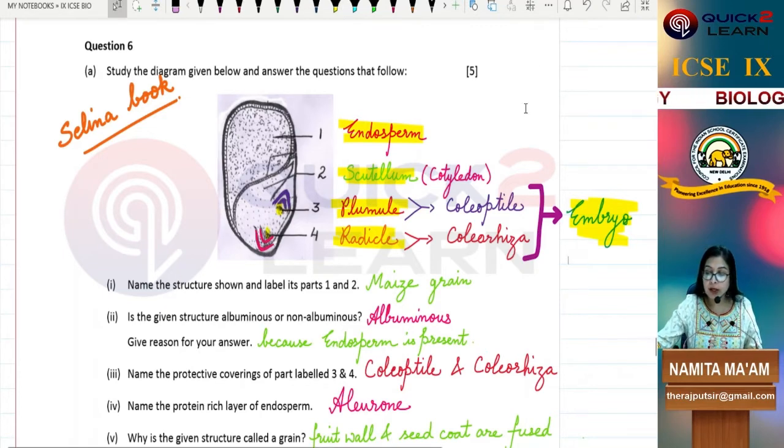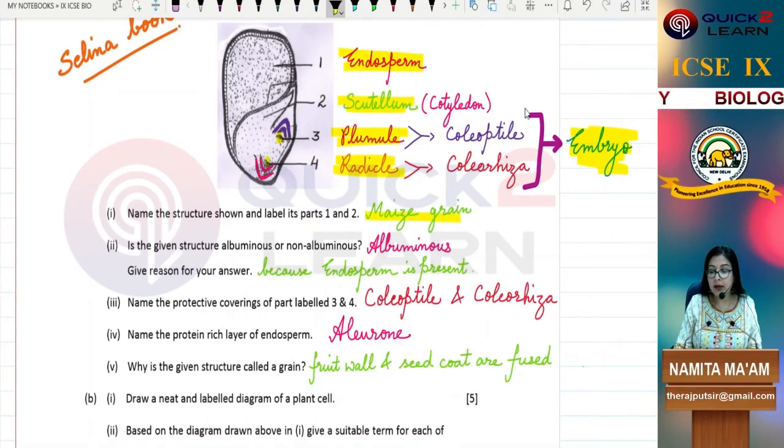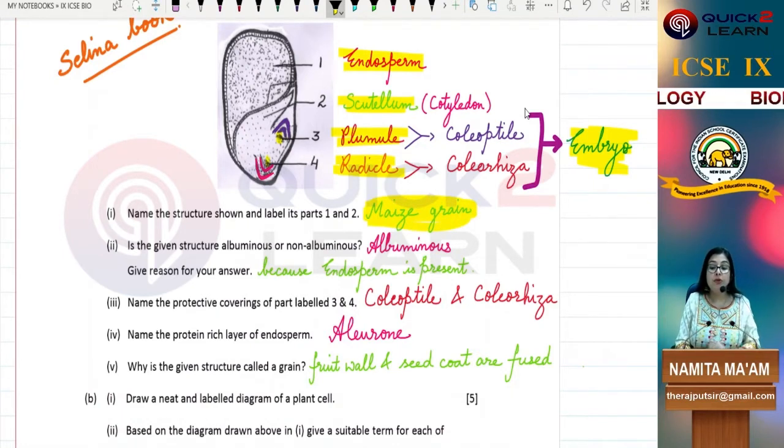What is the first question? Name the structure shown and label its parts 1 and 2. What is the structure? Maize grain. Why do you call it grain? Because the fruit wall and seed coat are fused. So we don't call it seed, we call it grain.